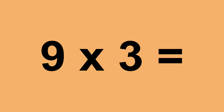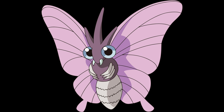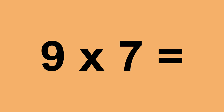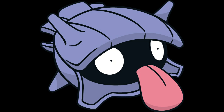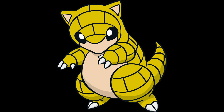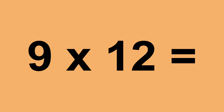Nine times three equals twenty-seven. Nine times four equals thirty-six. Nine times five equals forty-five. Nine times six equals fifty-four. Nine times seven equals sixty-three. Nine times eight equals seventy-two. Nine times nine equals eighty-one. Nine times ten equals ninety. Nine times eleven equals ninety-nine. Nine times twelve equals one hundred and eight.